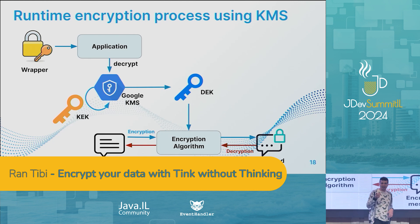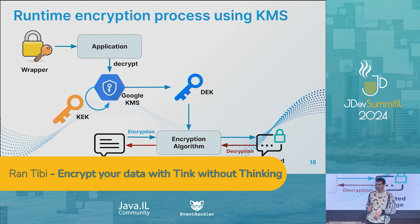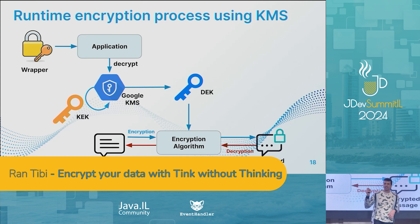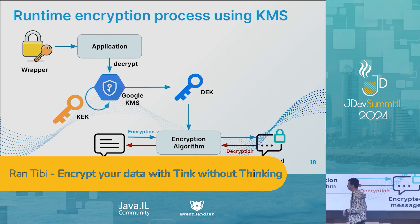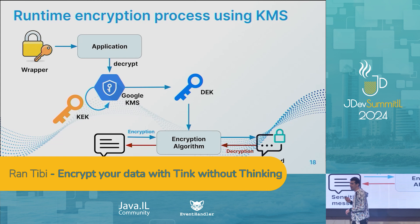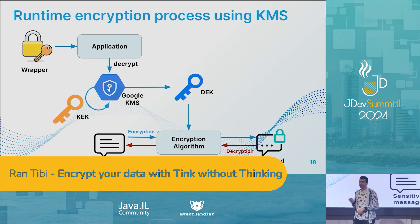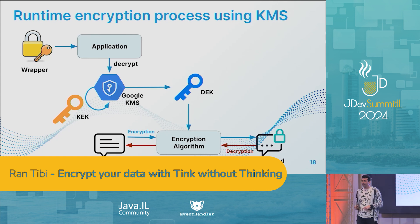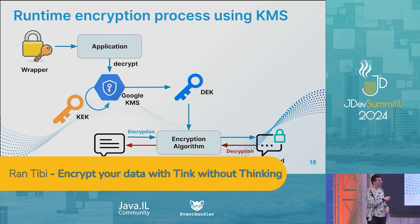And then, once we have the wrapper, we can start encrypting. The application gets the wrapper and requests KMS to decrypt the wrapper using the URI to the KEK — only the URI, not the KEK itself. If the application has the right permission, Google KMS will decrypt the wrapper and will return the DEK to us. From this moment, the DEK is in memory and we can use it for encryption or decryption as many times as we want.